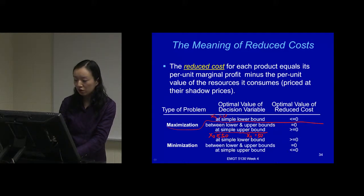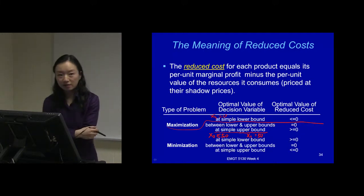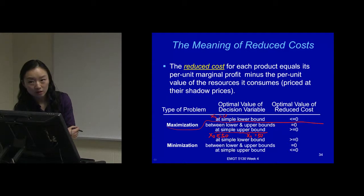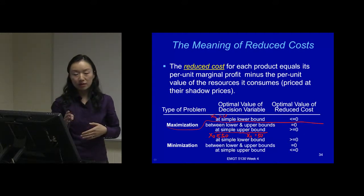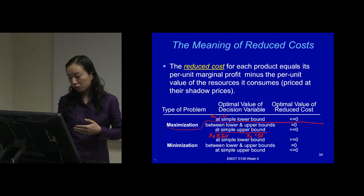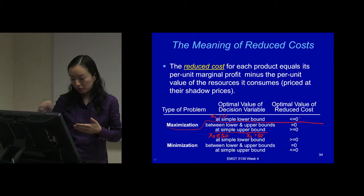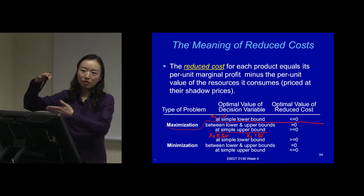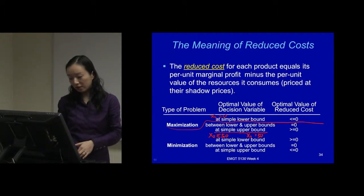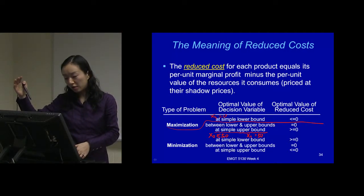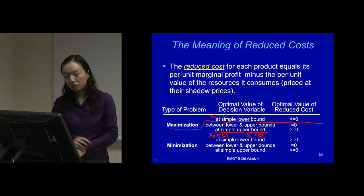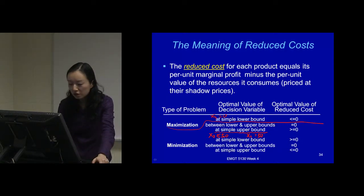Then we know the optimal reduced cost is greater than or equal to zero — it can equal zero, but it can be greater than zero. Think about it: the reduced cost is the impact on your objective function value, and it's a maximization problem. A reduced cost ≥ 0 means increasing this decision variable can help improve your objective function value. It's at this value because of the upper bound — it cannot increase anymore. Without the bound, x2 would keep increasing until hitting a constraint, and the reduced cost would probably be just zero. So these are the rules about reduced cost.